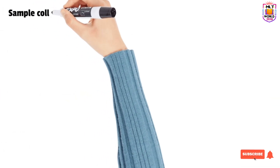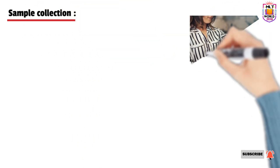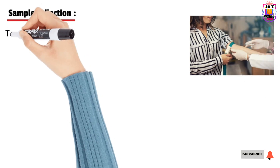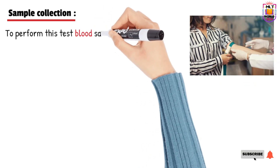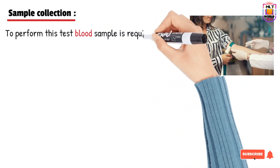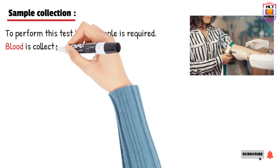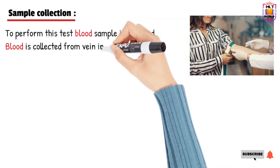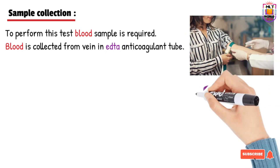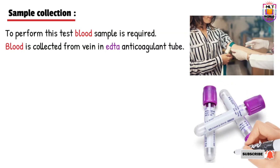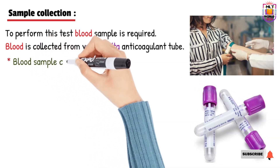What type of sample is required to perform a G6PD test? The G6PD test is performed using blood, which is collected through the vein of the patient into an EDTA tube. EDTA is an anticoagulant, and the cap color is purple. Whole blood is required to perform this test, and the sample can be collected at any time.